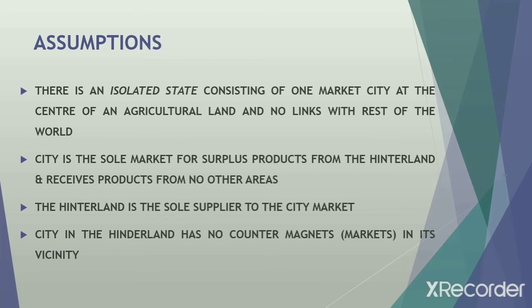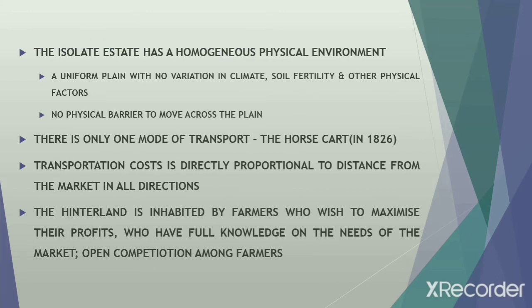Now let's look into the assumptions made by Von Thünen. There is an isolated estate with one city at the center of an agricultural area, and this city has no link with the rest of the world. The city is the sole market for surplus production from the agricultural area, and the agricultural area is the sole supplier to the city. This isolated estate has no counter-magnets in its vicinity. The isolated estate is a uniform plane with no variation in soil fertility, climate, or any physical factors, making the agricultural plane homogeneous in character. There are no physical barriers to movement across the plane.